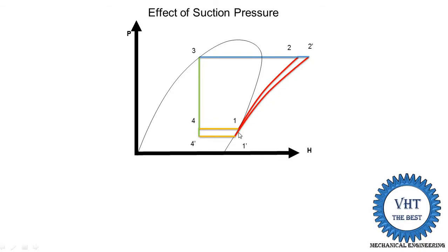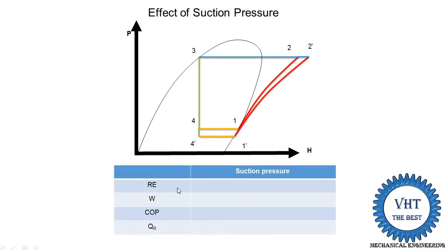Work done is increased because H1-dash moves left and its value is reduced, while H2-dash is also increased, making the difference H2-dash minus H1-dash larger than H2 minus H1. So COP equals refrigerating effect divided by work done: refrigerating effect is reduced and work done is increased, so COP is reduced. Heat rejection is also increased because the quantity H2-dash minus H3 adds more heat. So the effect of reduced suction pressure reduces the COP — it is not useful for increasing the COP of the system.